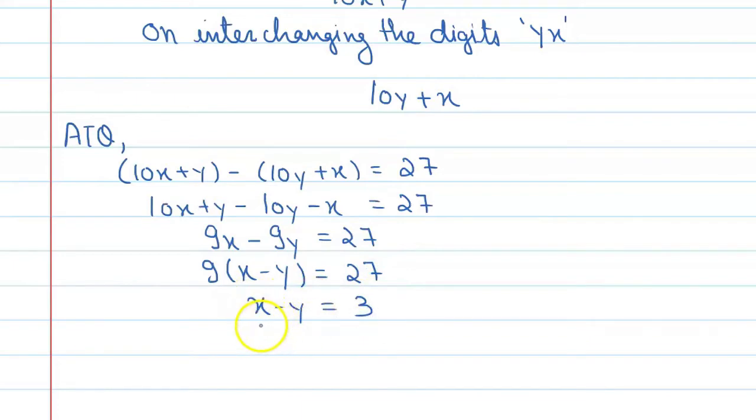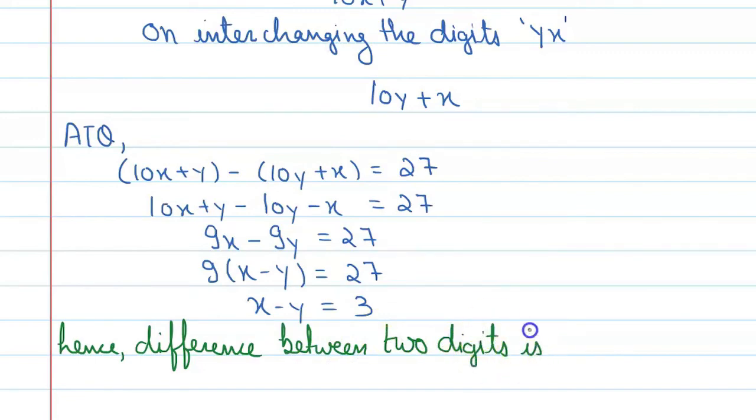So, x minus y implies difference of two digits, x and y difference here and it is equal to 3. So, we will write our final answer. Hence, difference between two digits is 3.